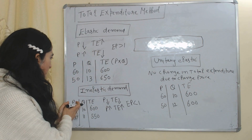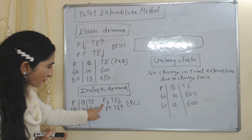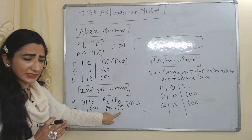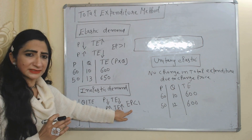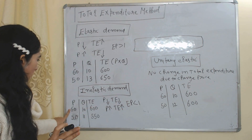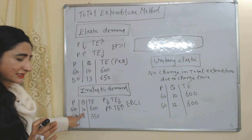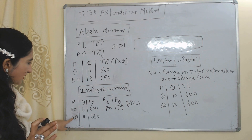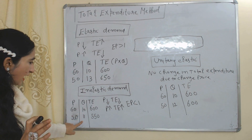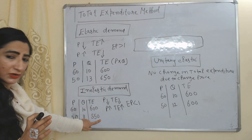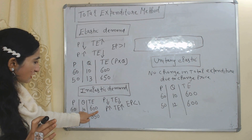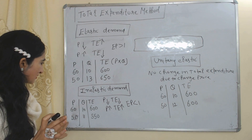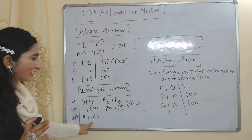The second case is inelastic demand. When price falls, total expenditure also falls. When price falls from 60 to 50, demand increases from 10 to 11, but total expenditure falls. Earlier our total expenditure was 600 but now it is 550. That means when price reduces, total expenditure also falls — this is inelastic demand, where price elasticity of demand is less than one.